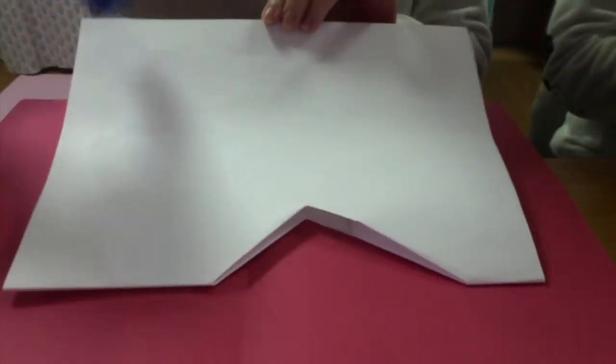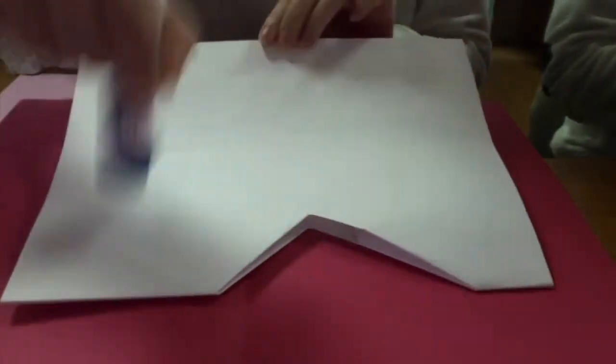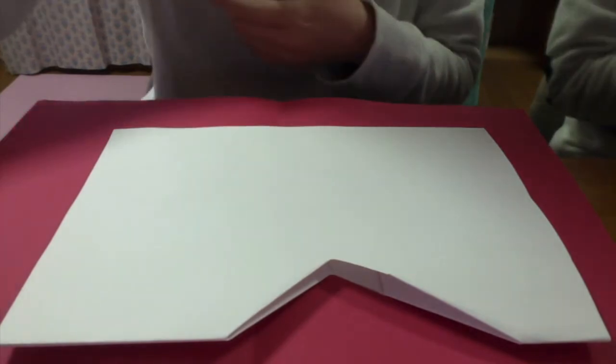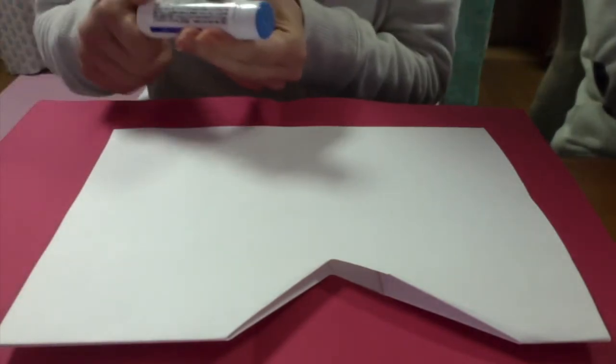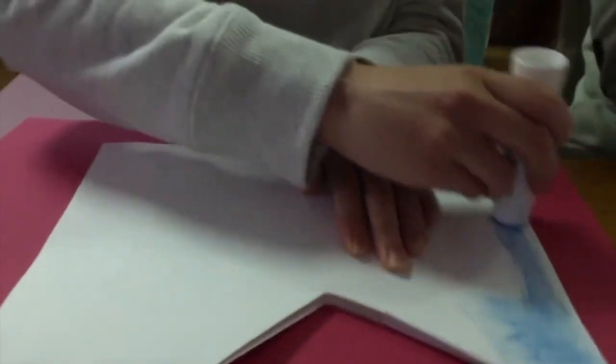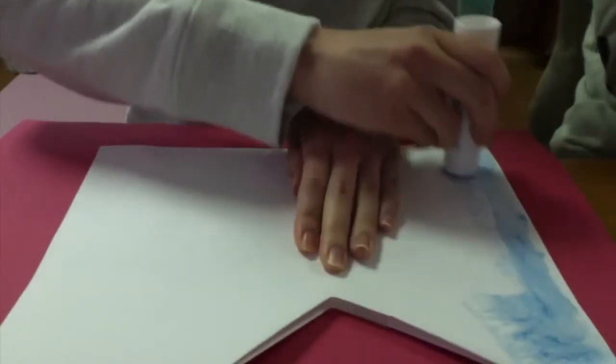Now it's time to glue our shark onto the red paper. Take the folded page and glue one half first. Be very generous.